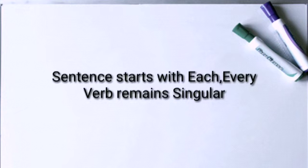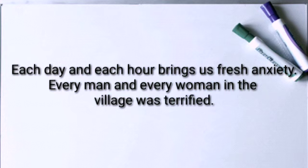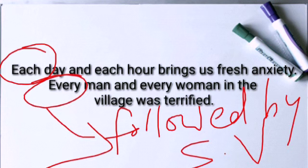If two singular nouns are joined by 'and' and are preceded by 'each' or 'every,' the following verb remains singular. For example: 'Each day and each hour brings us fresh anxiety.' 'Every man and every woman in the village was terrified.' In the first sentence, 'day' and 'hour' are singular nouns joined by 'and,' but preceded by 'each,' so the following verb is in singular form.